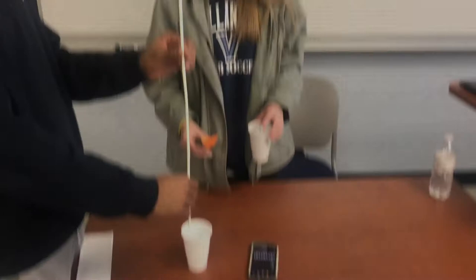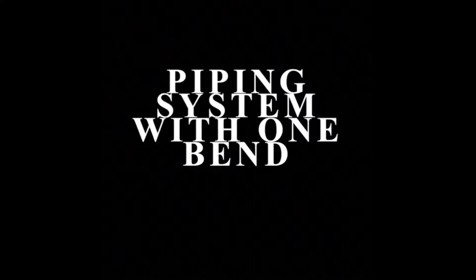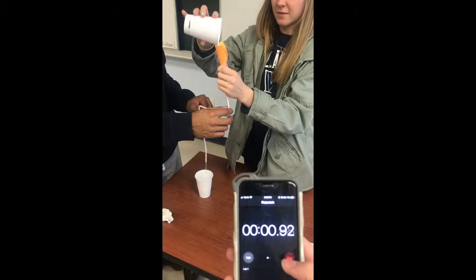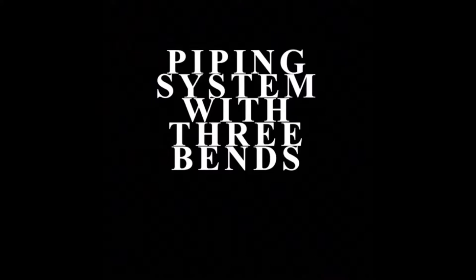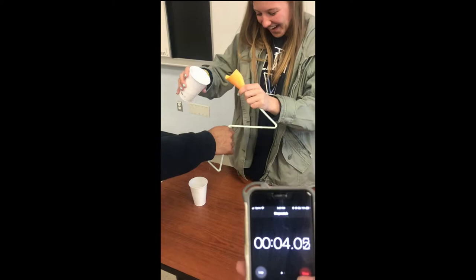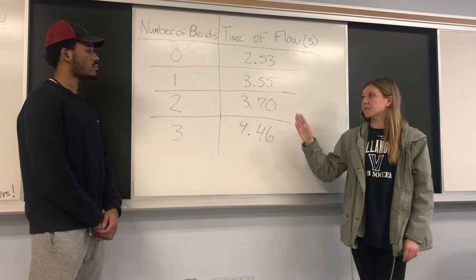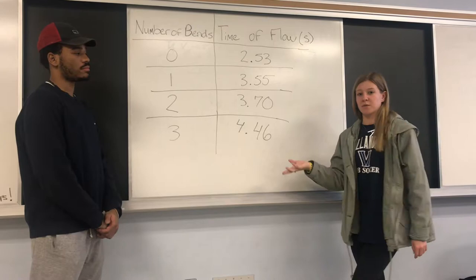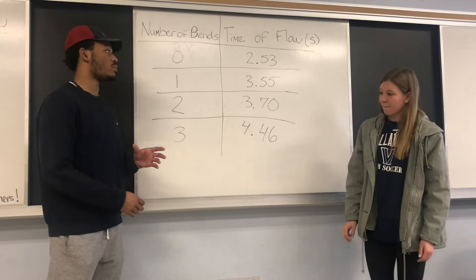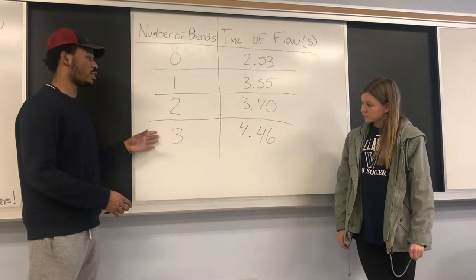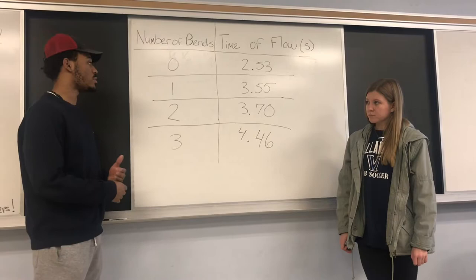The first set we're going to do has no bends in it. We're going to pour water through the funnel, through the straw, and time how long it takes to flow into the cup. [Experiment runs for each bend configuration.] As you can see, the number of bends did affect the time of flow — as the number of bends increased, so did the time of the flow. That has to do with the properties discussed in our introduction. Although gravitational force is constant through all demonstrations, the different bends cause different friction and therefore increase the time it took for the flow to go through the pipes.